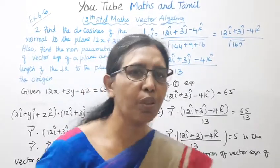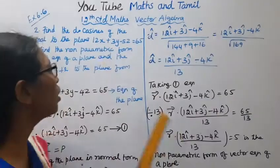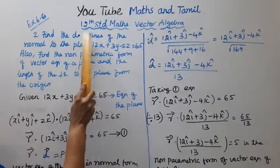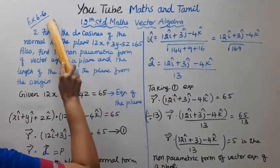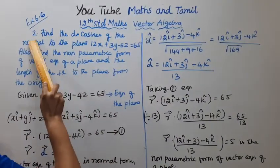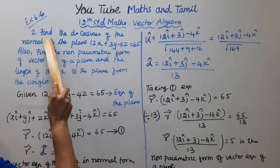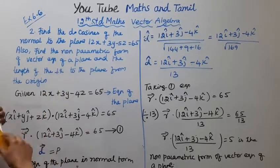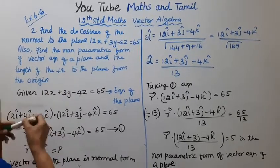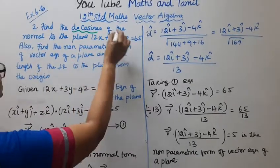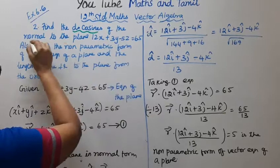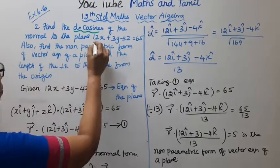Hello students, welcome to Maths and Tamil channel. 12th standard Maths Vector Algebra, exercise 6.6 second sum. Find the direction cosines of the normal to the plane.